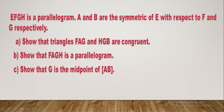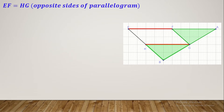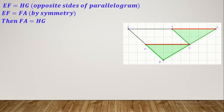Now let's continue together. In part A, show that triangles FAG and HGB are congruent. Triangles can be congruent by side-side-side, angle-side, or angle-side-angle. We have parallelogram EFGH, so the opposite sides are equal and parallel. EF equals HG as opposite sides, and EF equals FA by symmetry. Therefore FA equals HG — that's our first pair of sides.